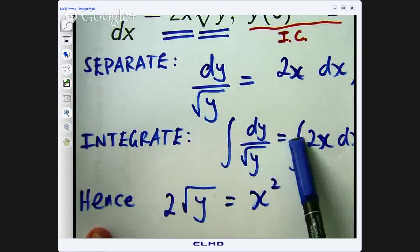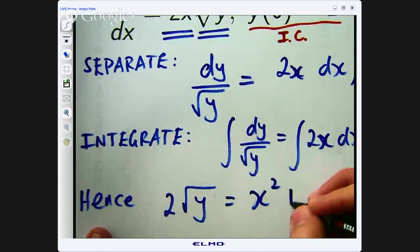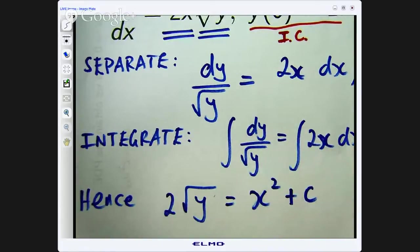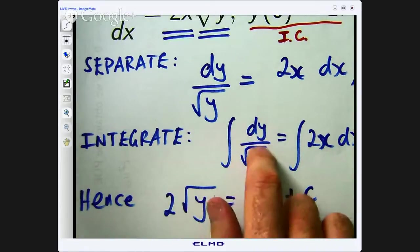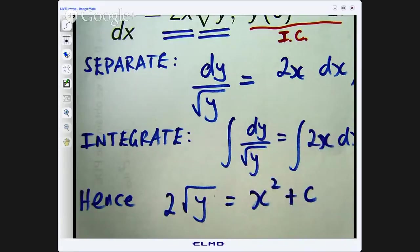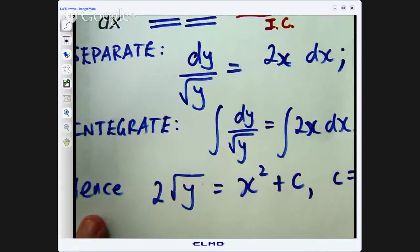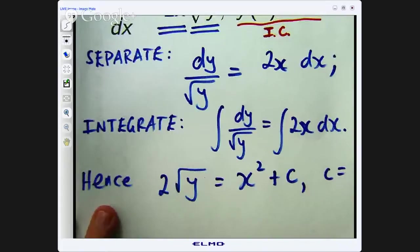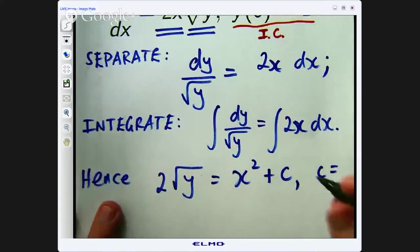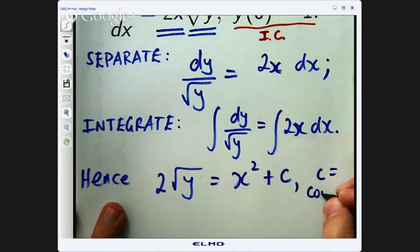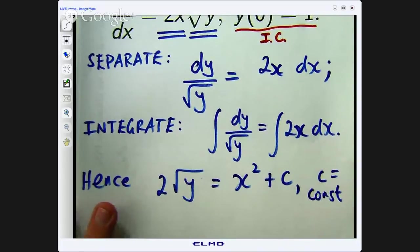Now even though I have got two integral signs here I only need one constant of integration. If you feel really strongly about it though you can put a constant of integration for each one. It is up to you. Okay, so c here is a constant. So what I can do now is bring the two over here and I have an expression involving y.